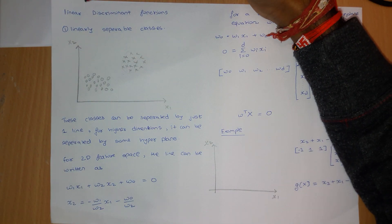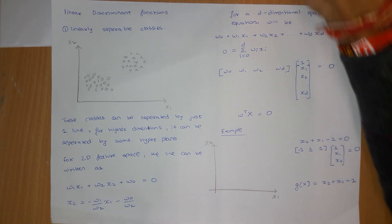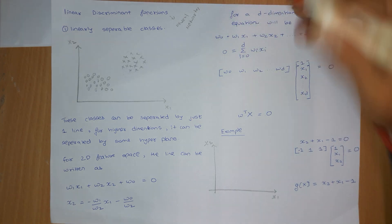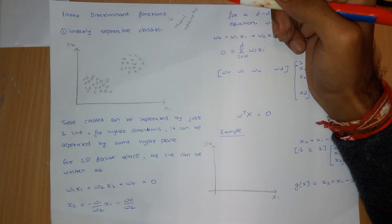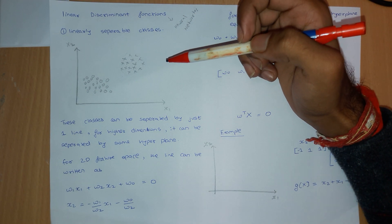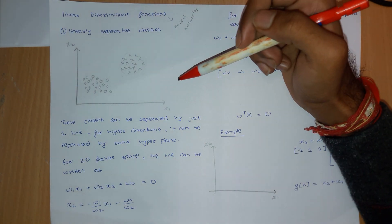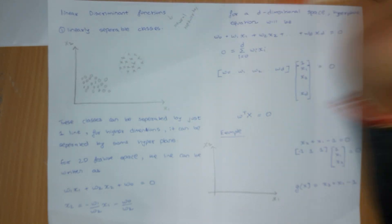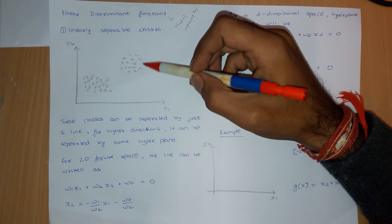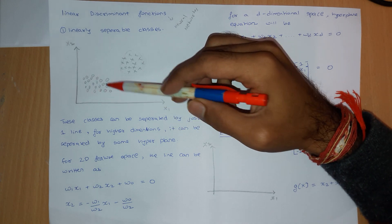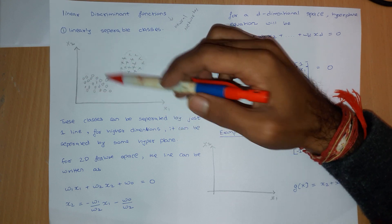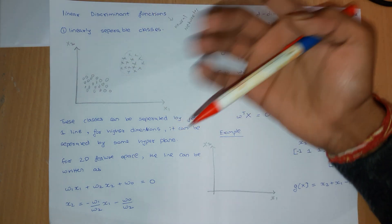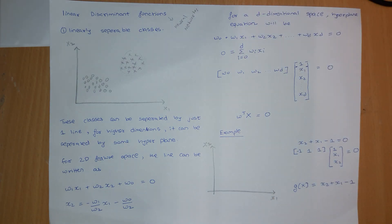Hello guys, in this video we are going to talk about linear discriminant functions. With this topic we are slowly going to enter into artificial neural networks, so this is the basics for entering into these kinds of topics. Previously we have seen the Bayesian decision rule, GMM, k-means, and non-parametric methods. In all these methods, what we used to do is assume a probability density function for all the classes.